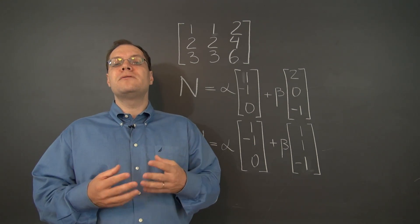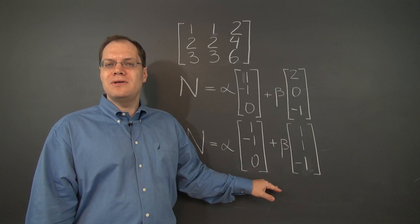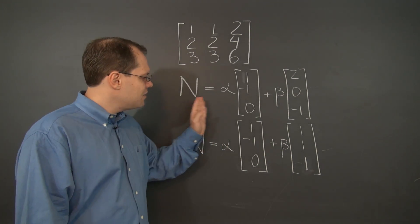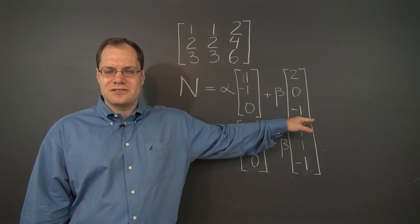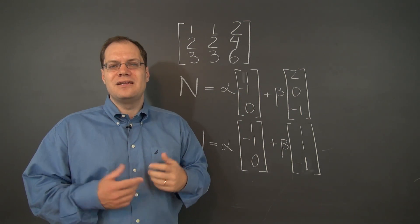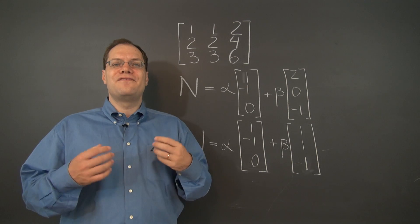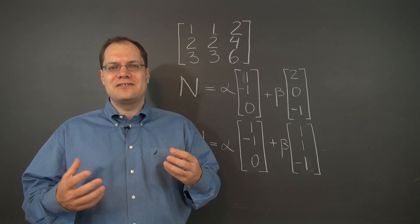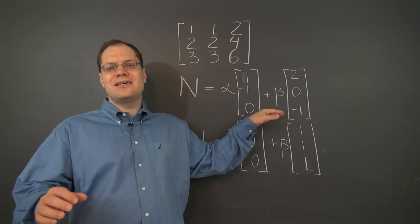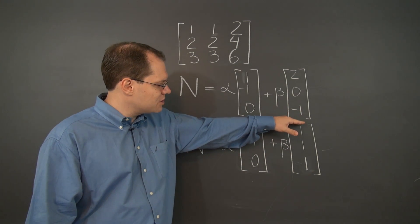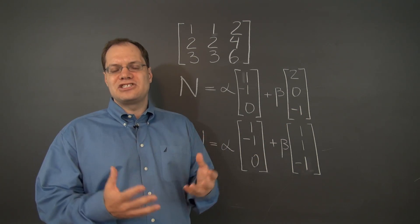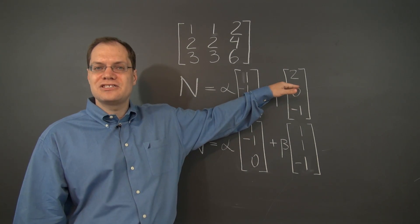The important point is that these expressions don't mix in the first place. The null space of a matrix is not an expression. The notation makes it seem like an expression — alpha times this vector plus beta times this vector — but that's not the null space. The null space is a collection of vectors, which is a very different thing. This expression merely represents, or notates, what that collection of vectors is.